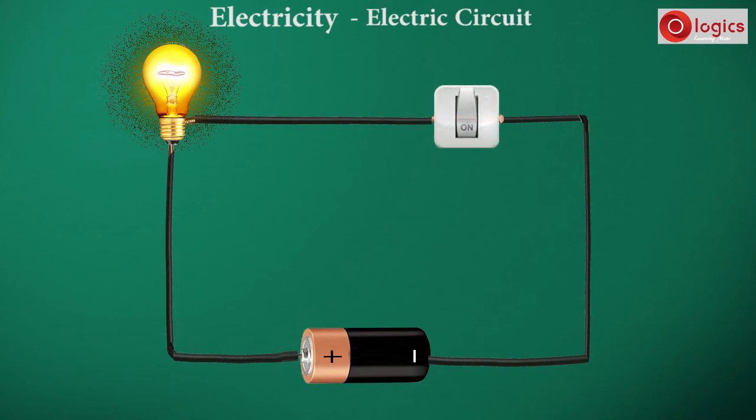How do you draw this electric circuit on a piece of paper? You have to understand, each component of the electric circuit is represented by a symbol.